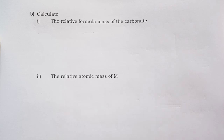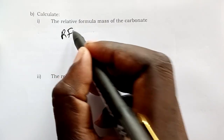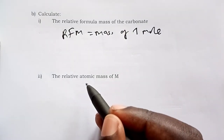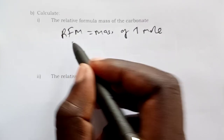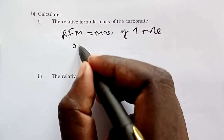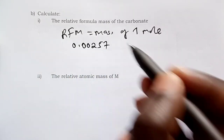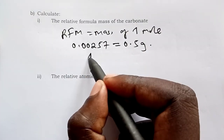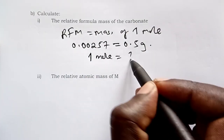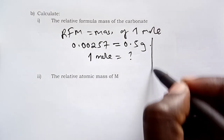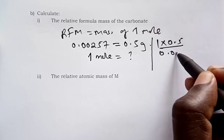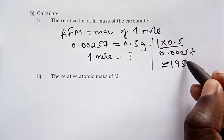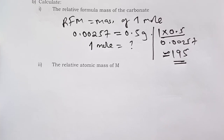To calculate the relative formula mass (RFM) of the carbonate: RFM is the mass of one mole. We have 0.00257 moles equivalent to 0.5 grams. So 1 mole = 1 × 0.5 ÷ 0.00257 ≈ 195. Therefore RFM of M₂CO₃ ≈ 195 (no units).